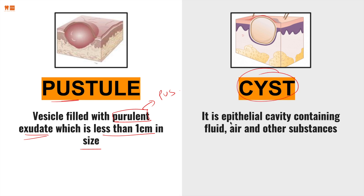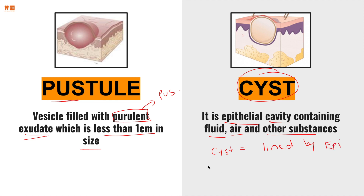A cyst is an epithelial cavity — which means it's a cavity lined by epithelium — containing fluid, air, and other substances such as gas. By definition, a cyst is something that is lined by epithelium. However, when the same type of lesion — you can tell it on x-ray or on histology — is not lined by epithelium, we call it a pseudocyst.